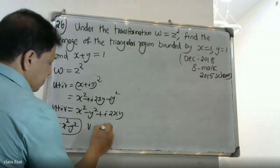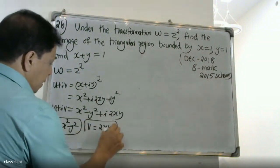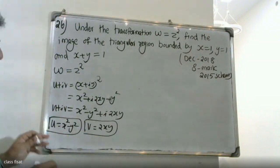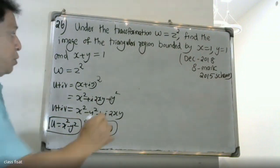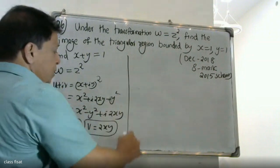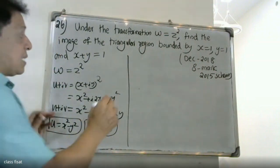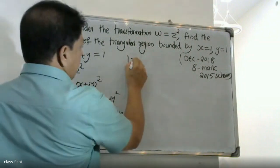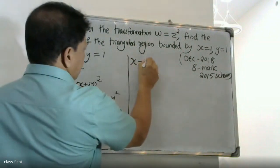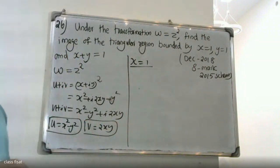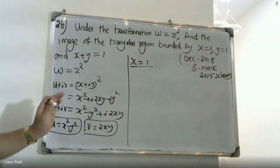So u is equal to x squared minus y squared and v is equal to 2xy. Now, for the case x equal to 1.